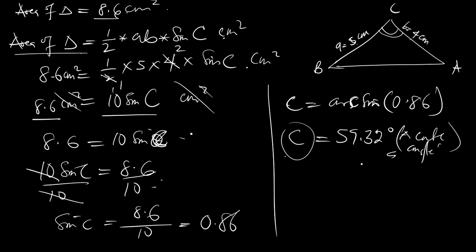But they say C is an obtuse angle. So for C to be an obtuse angle, the reference angle is 180 minus this value, which is 59.32. Since C is an obtuse angle, which is the value of C.